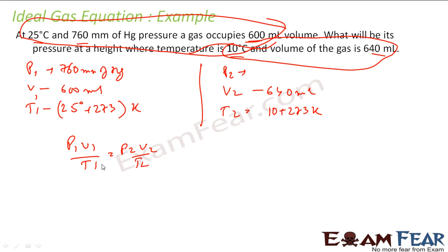So we have this formula P1V1 by T1 equals P2V2 by T2. And please note this is called combined gas law. So let us put the values here. So I have to find P2 here. P2 will come out to be P1V1 by T1 times T2 by V2.